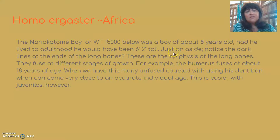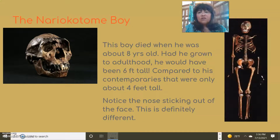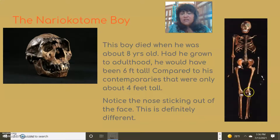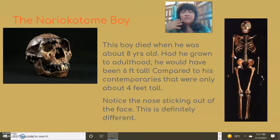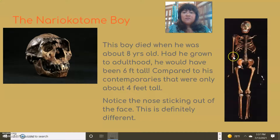Ergaster is also represented by the Nariokotome Boy, also known as WT-15000. You can see lines on the bones called epiphyseal fissures, which close as a person gets older — just as in our skeletons today. Because these are almost all open, we know he was a child, and based on his dentition, he was about eight years old when he died.